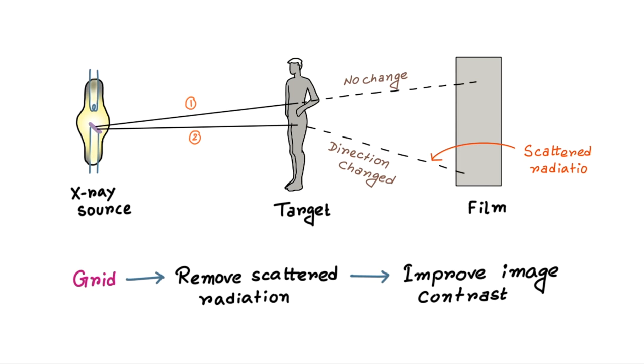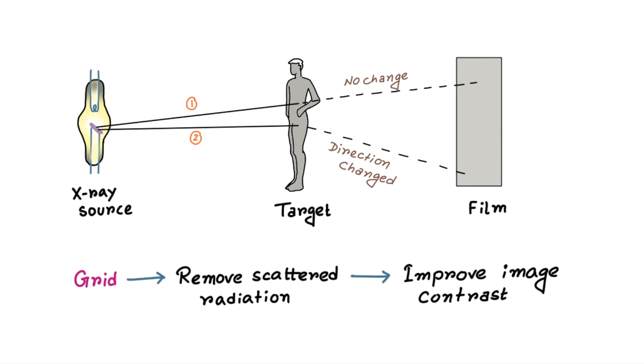So the radiation because of this second type of ray is called scattered radiation. This type of radiation is responsible for film fog.